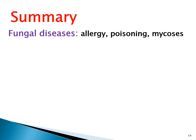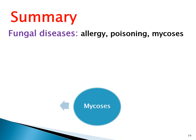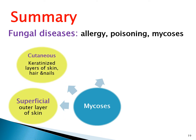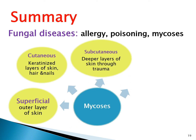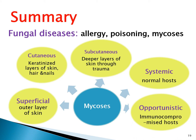In summary, we talked about three categories of fungal diseases: fungal allergy, fungal poisoning (including ergotism, aflatoxin poisoning, and mushroom poisoning), and mycosis. For mycosis, we discussed superficial mycosis affecting the outermost skin layer, cutaneous mycosis affecting keratinized layers with hair and nails, subcutaneous mycosis affecting deep skin layers through trauma, systemic/deep mycosis affecting normal hosts caused by dimorphic pathogenic fungi, and opportunistic mycosis affecting immunocompromised hosts caused mainly by Candida, Cryptococcus, or Aspergillus.